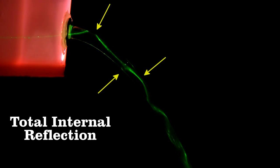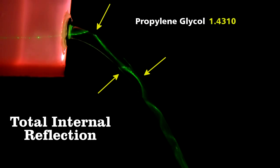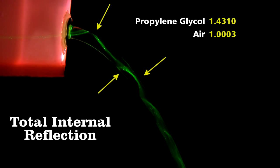This occurs because there's a difference between the index of refraction of the guide material, here propylene glycol, and the outside, air in this case.